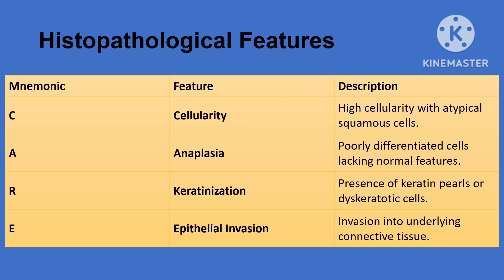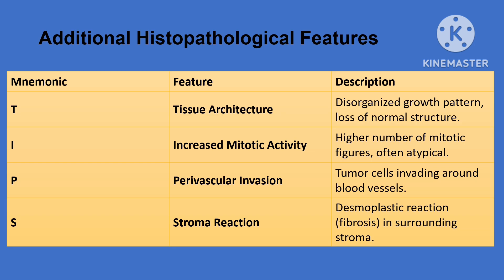For the histopathology of oral cancer we can use the mnemonic CARE TIPS: C stands for increased cellularity — more atypical cells are present; A for anaplasia indicating poorly differentiated cells; R highlights keratinization seen as keratin pearls or disc keratotic cells; E refers to epithelial invasion where the tumor spreads into deeper tissues; T stands for disorganized tissue structures; I means increased mitotic activity with abnormal cell division; P is perivascular invasion as the tumor surrounds blood vessels; and S signifies stromal reaction — an increased fibrotic response in the surrounding tissue.